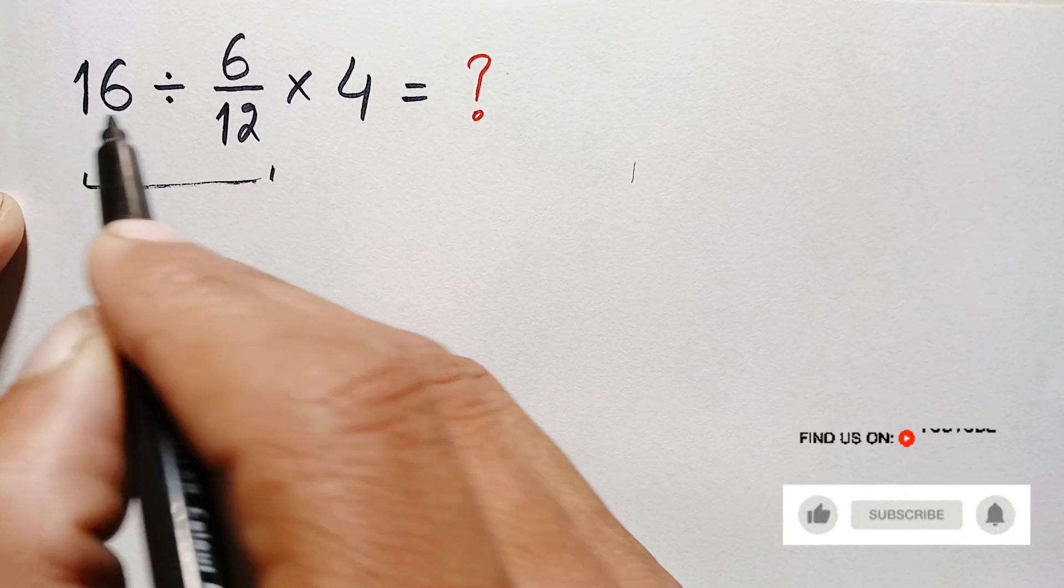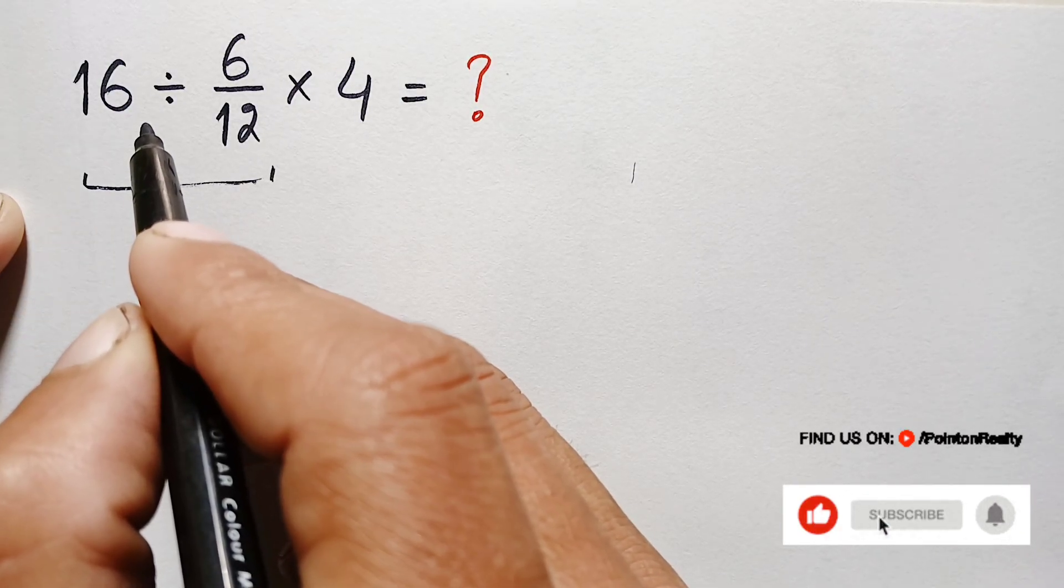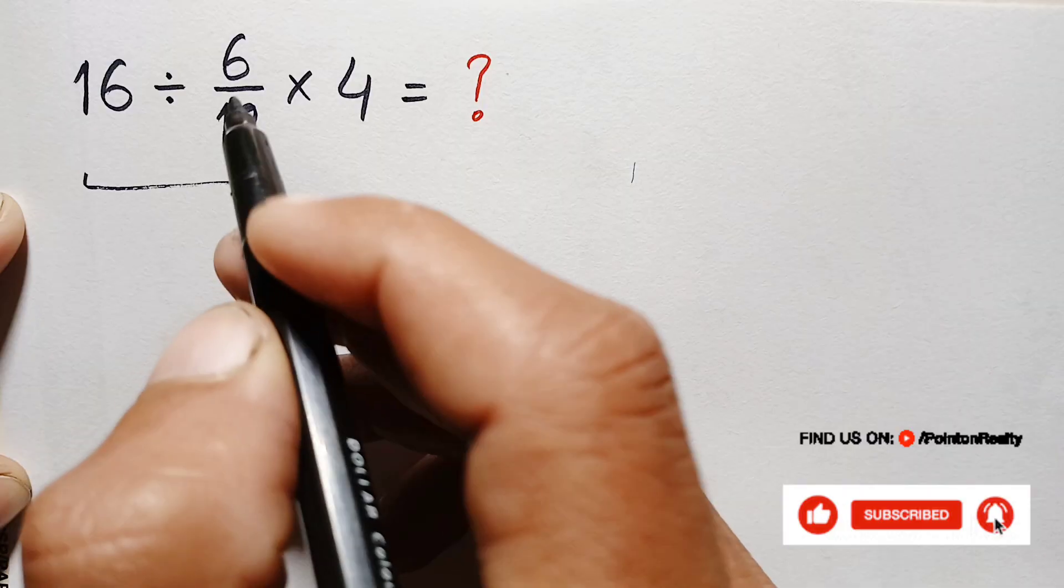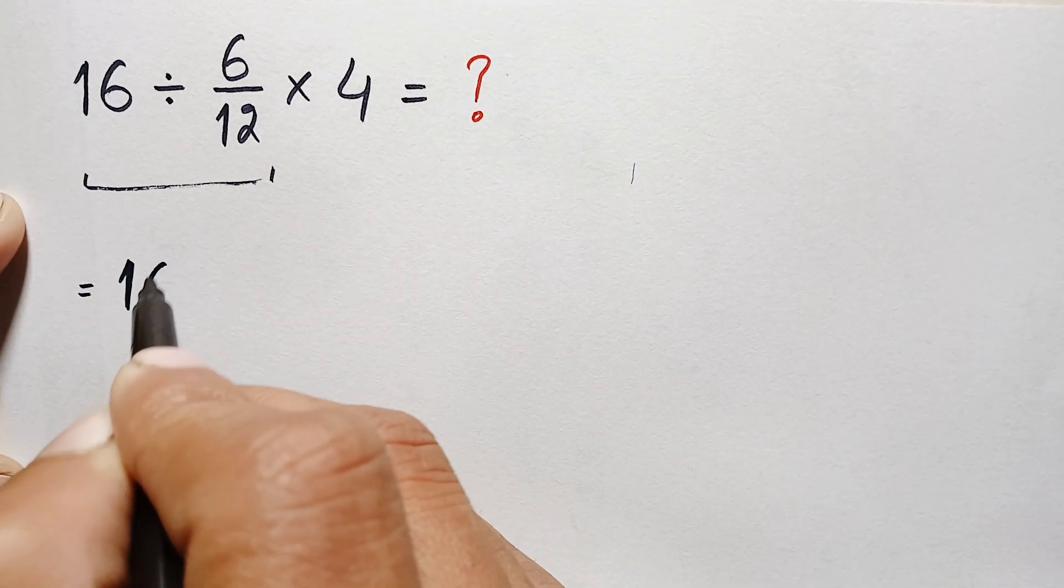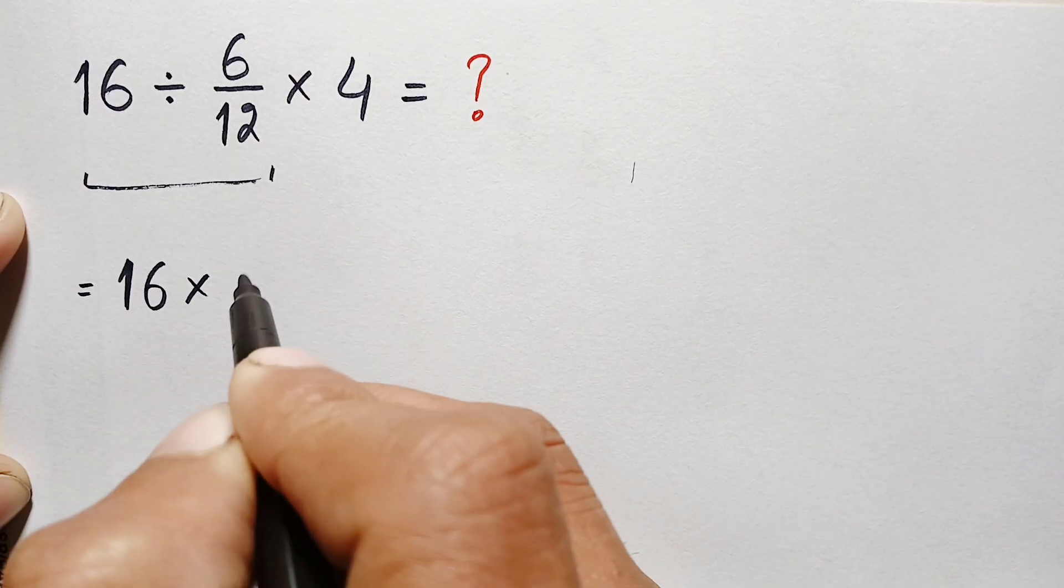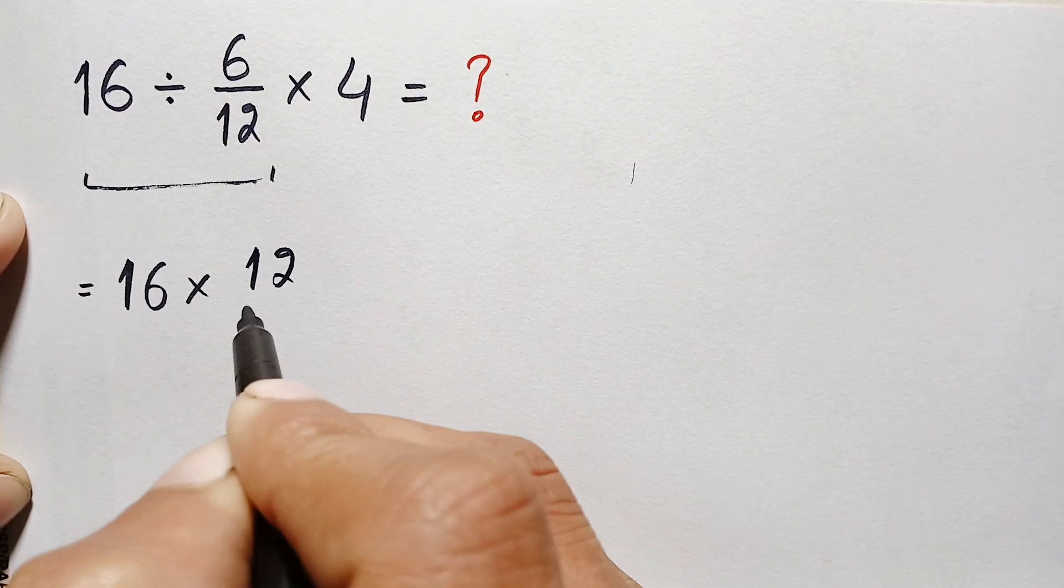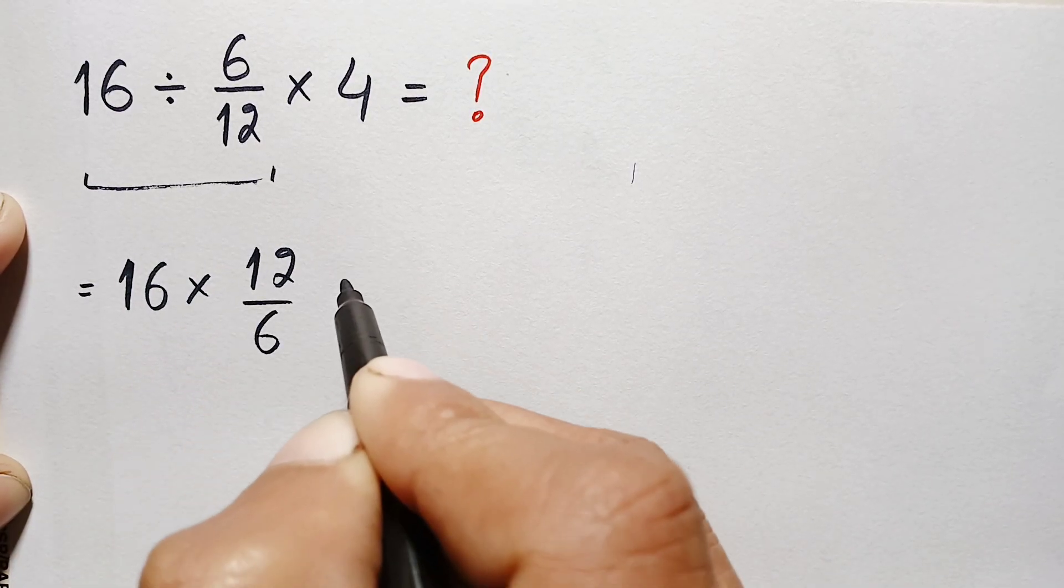By the KFC rule, we will leave the first number the same, change the division sign to multiplication, and reverse this fraction. Therefore, this equation will become 16 times 12 divided by 6 times 4.